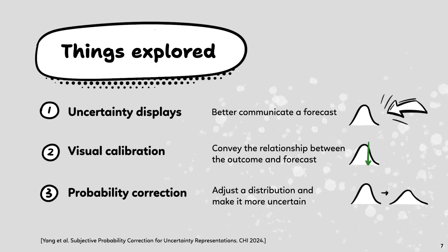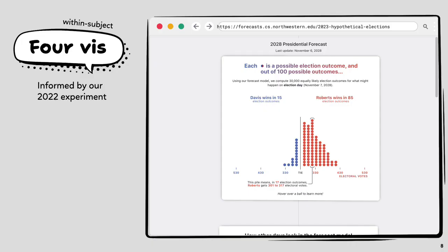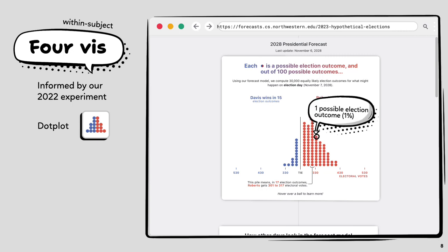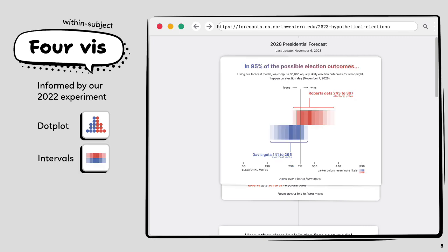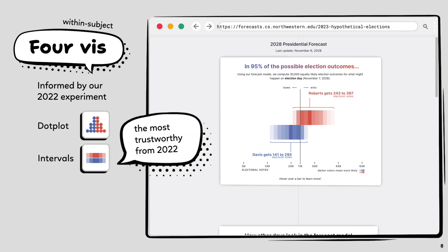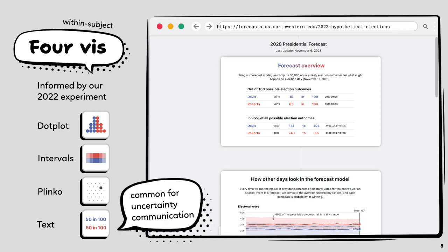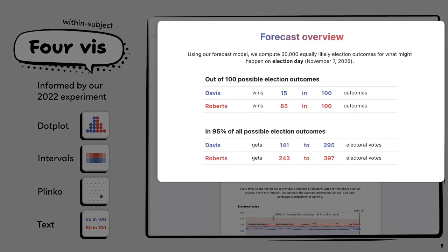For today, I focus on the first direction because the second and third directions did not give us promising results. We explore four different uncertainty representations: a dot plot, which is a top-performing representation in the literature for decision-making under uncertainty; intervals, the most trusted visualization from our 2022 experiment; an animation called the Plinko, designed to let people experience uncertainty; and a text representation showing both win probabilities and ranges of possible electoral college votes.